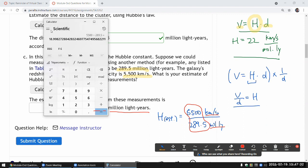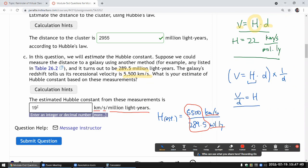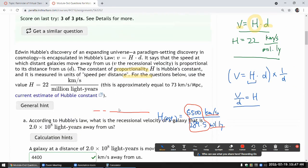So 18.998 or close enough to 19. Let me plug in 19. 19 km per second per million light years. So yeah, that's it.